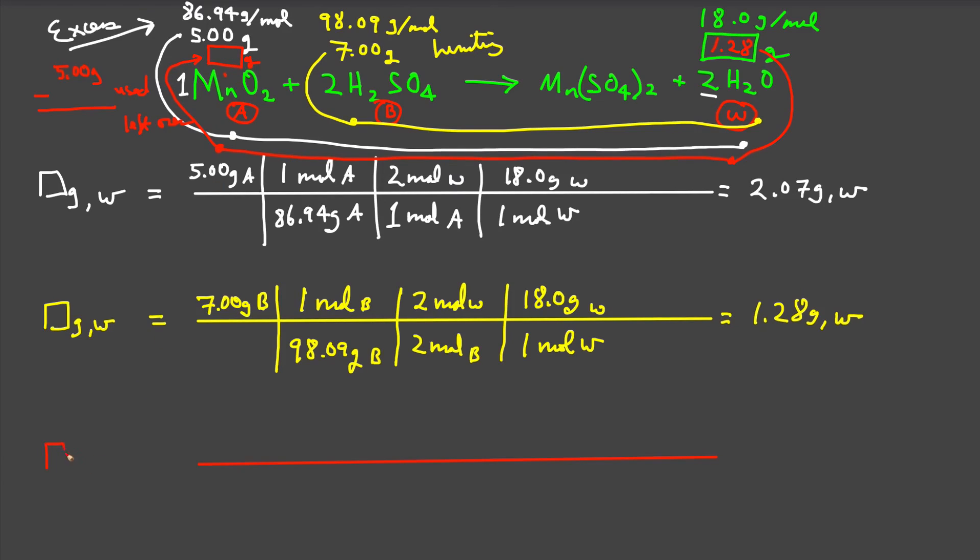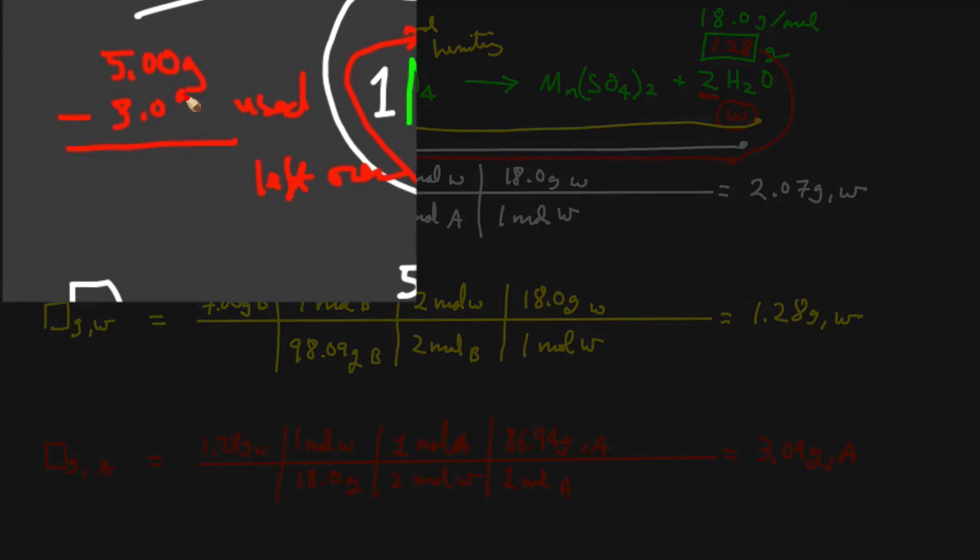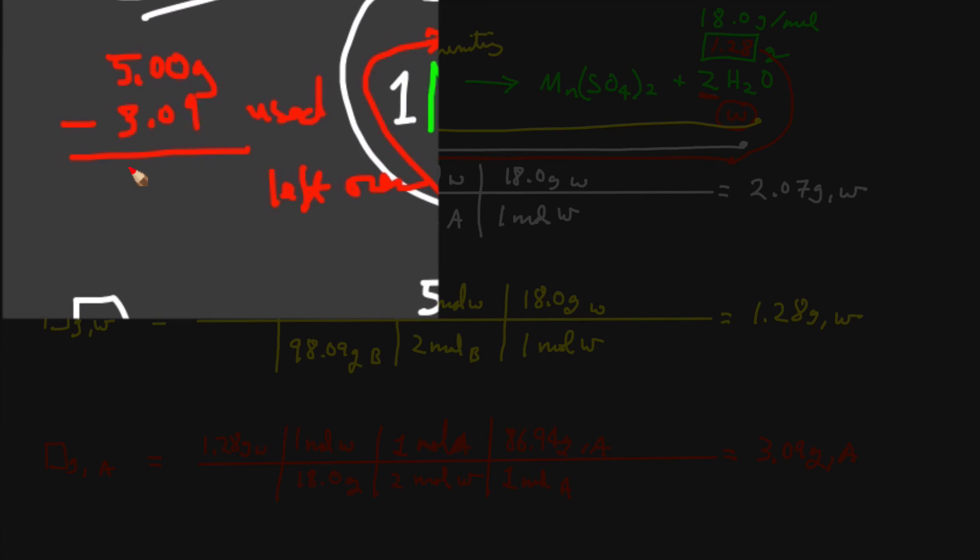So here we go. How many grams of manganese dioxide do I need to make 1.28 grams of water? And that gives us a total of 3.09 grams of manganese dioxide were actually used, leaving the amount behind as 1.91 grams.